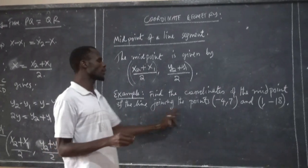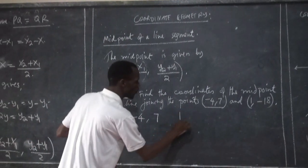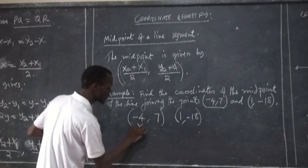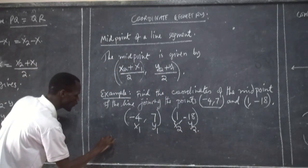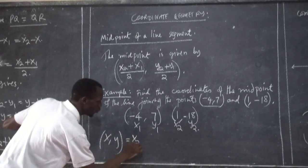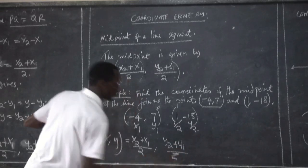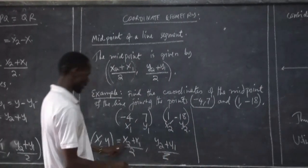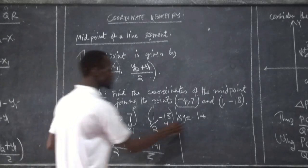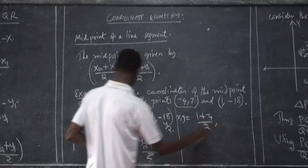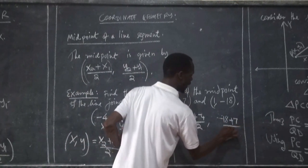Example: find the coordinates of the midpoint of the line joining the points (-4, 7) and (1, -18). Now, negative 4 comma 7 and 1 comma negative 18. Here, X1 is negative 4, X2 is 1, Y1 is 7, and Y2 is negative 18. Our midpoint is given by X comma Y, which equals X2 plus X1 over 2, comma Y2 plus Y1 over 2.